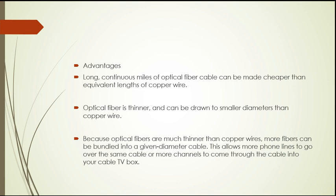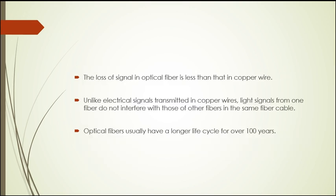Advantages: long continuous miles of optical fiber cable can be made cheaper than equivalent lengths of copper wire. Optical fiber is thinner and can be drawn to a smaller diameter than copper wire. Note that in engineering, signal-to-noise ratio is very important in communication, and the signal-to-noise ratio is higher in copper compared to optical fiber. Because optical fibers are much thinner than copper wire, more fibers can be bundled into a given diameter cable, allowing more phone lines or more channels to come through the same cable. Loss of signal in optical fiber is less than in copper wire. Unlike electrical signals in copper wire, light signals from one fiber do not interfere with those of other fibers in the same cable.